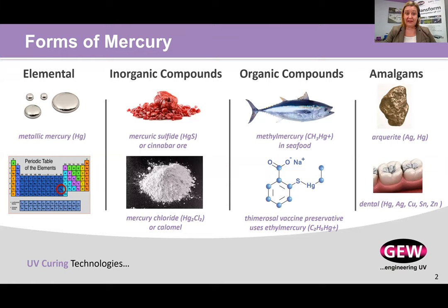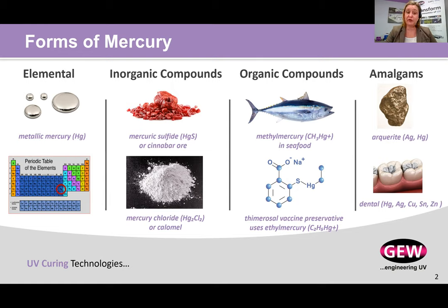Mercury is broadly classified as elemental, inorganic compounds, organic compounds, and amalgams. Elemental or metallic mercury is the form most of us are familiar with — it's listed on the periodic table and is what is used in many of the lighting technologies that we use in our processes. Inorganic compounds occur when elemental mercury reacts with a wide range of substances with the exception of carbon. Examples are mercuric sulfide, or cinnabar ore, and mercury chloride, or calomel.